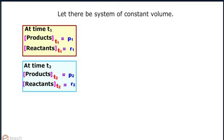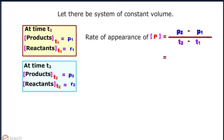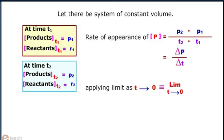Now, rate of appearance of P is equal to P2 minus P1 upon T2 minus T1, which is equal to del P by del T. Now, applying limit at T tending to 0, we get limit T tending to 0 del P by del T equals to dP by dT.